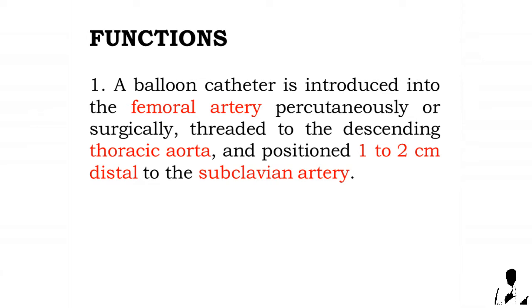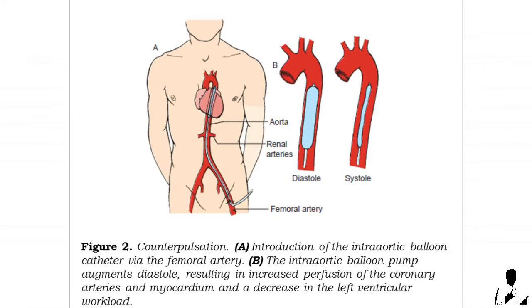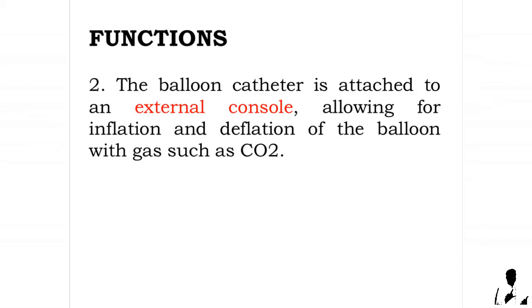Functions of the intra-aortic balloon pump: one, a balloon catheter is introduced into the femoral artery percutaneously or surgically, threaded to the descending thoracic aorta, and positioned one to two centimeters distal to the subclavian artery. The balloon catheter is attached to an external console allowing for inflation and deflation of the balloon with gas such as carbon dioxide.